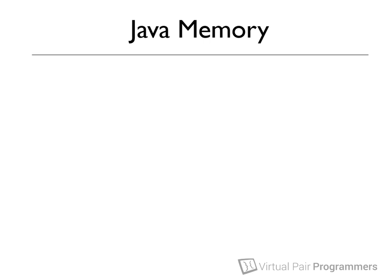Our starting point is understanding the terms: the stack and the heap. When our applications run, they need access to some of our computer's memory — for example, to store the objects that we create and hold in memory. This memory is split into two sections: the stack and the heap.